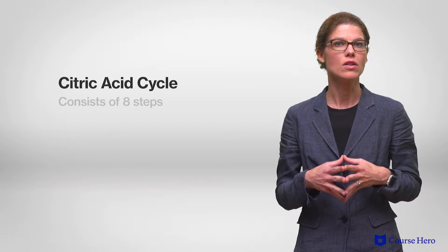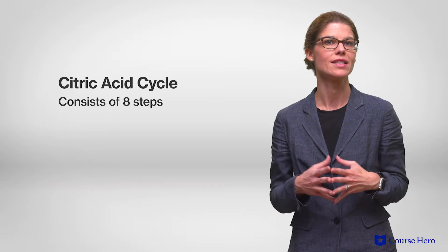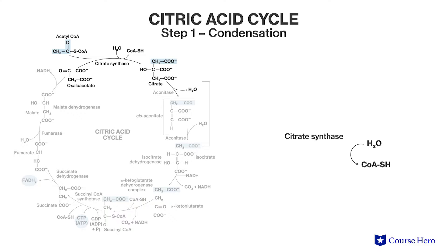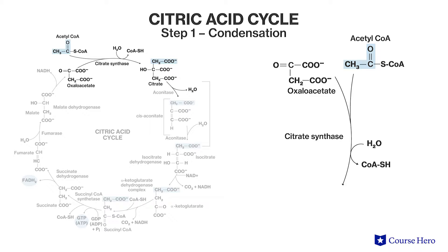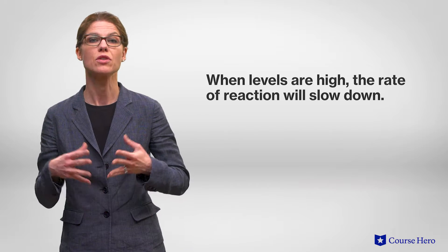The citric acid cycle consists of eight sequential steps that use the products of one reaction as the reactants of the next. Let's look at each step in turn. Step 1: Citrate synthase transfers the two-carbon acetyl group from acetyl-CoA to a four-carbon molecule called oxaloacetate, resulting in the production of a six-carbon citrate molecule. This step involves a condensation reaction and the rate is controlled by the levels of ATP in the cell, so that when levels are high, the rate of reaction will slow down.